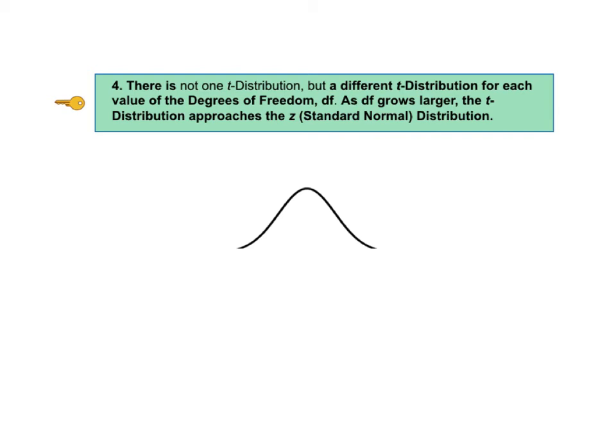For a single sample, df equals n minus 1, where n is the sample size. For other situations, it gets more complicated. For example, in the two-sample t-test, degrees of freedom equals n sub 1 plus n sub 2 minus 2.